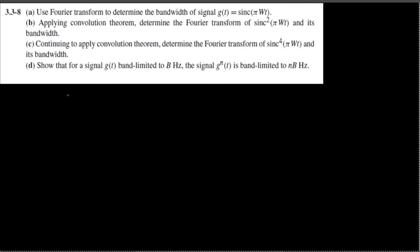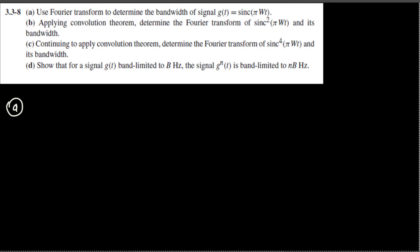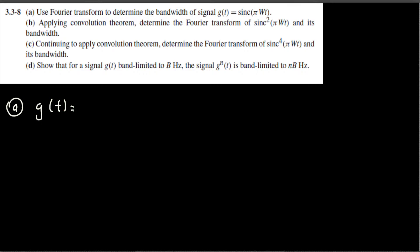Let's go ahead and do Part A. Part A is asking us to use Fourier transform to determine the bandwidth of signal g(t) = sinc(φωt). The provided function is g(t) = sinc(φωt).